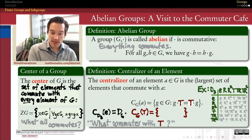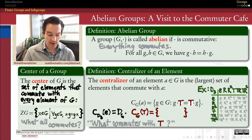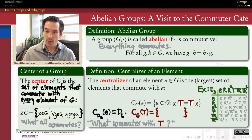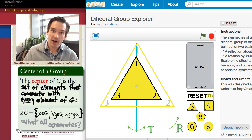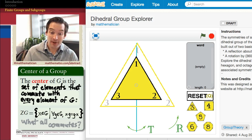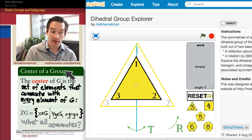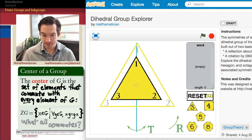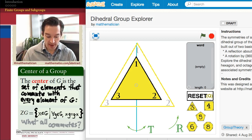How about T? Suppose I take the reflection element inside of my group of symmetries and I want to know what commutes with T — so I want to find the centralizer of T. Let's get out our virtual equilateral triangle and try this out. You can find a link to this dihedral group explorer on my website. So what commutes with T?